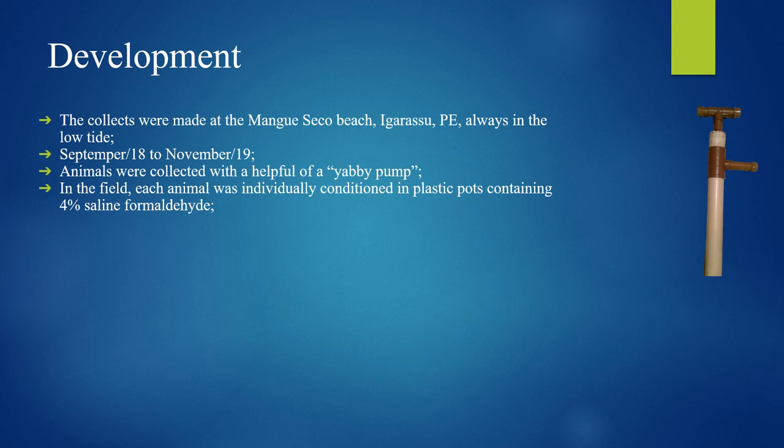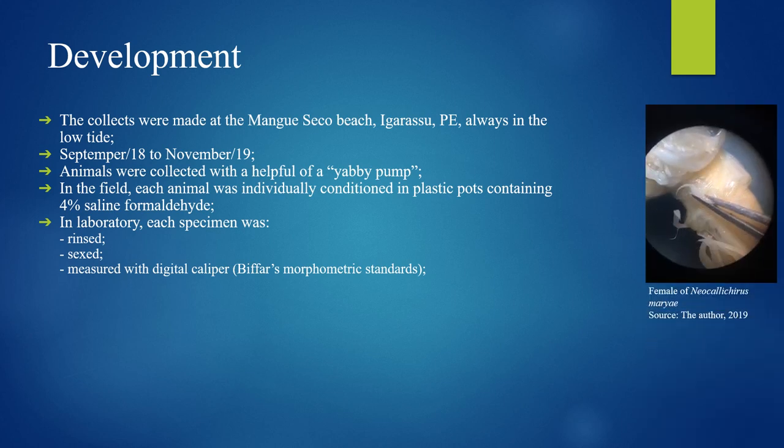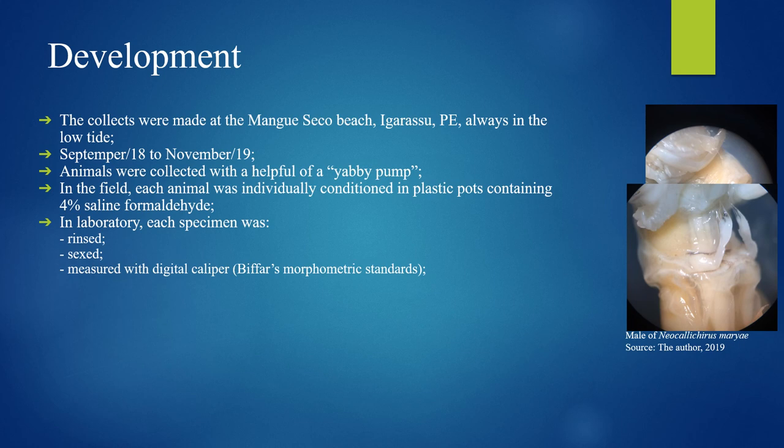In the field, each animal was individually conditioned in plastic containers with 4% saline formaldehyde. In the laboratory, each specimen was rinsed, sexed, following features of the first pair of pleopods,